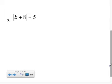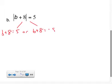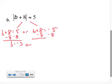So in part B, it's the same idea, except now there's a little bit of work to be done. So you have B plus 8 equals 5, or B plus 8 equals negative 5. And then all you do is solve these two equations separately. So subtract 8. So either B equals negative 3, or subtract 8, B equals negative 13.